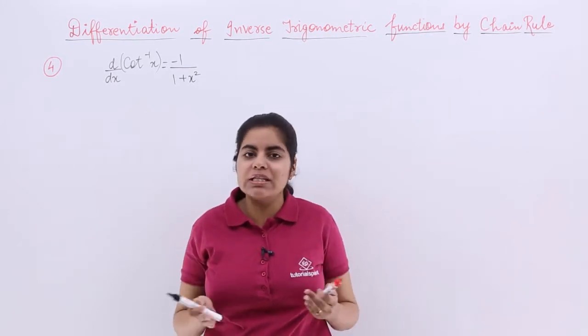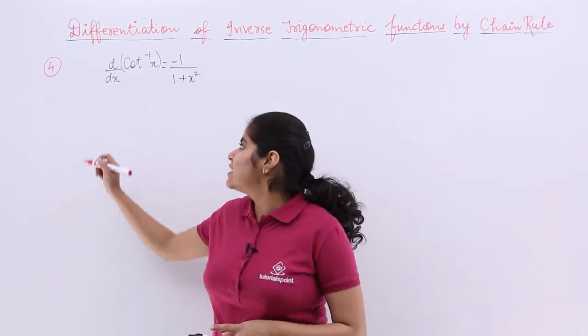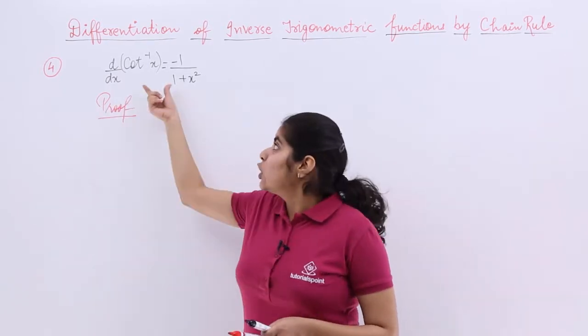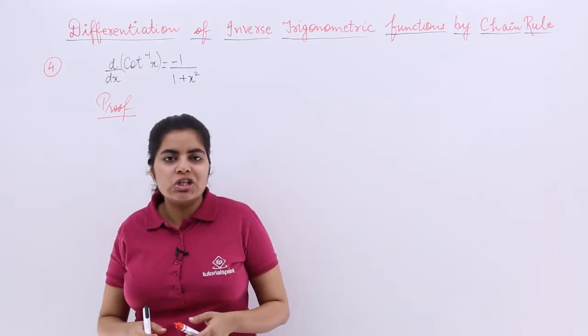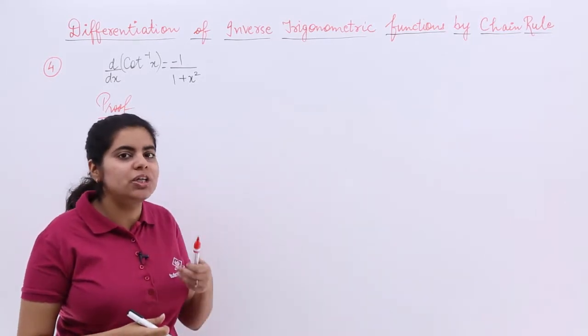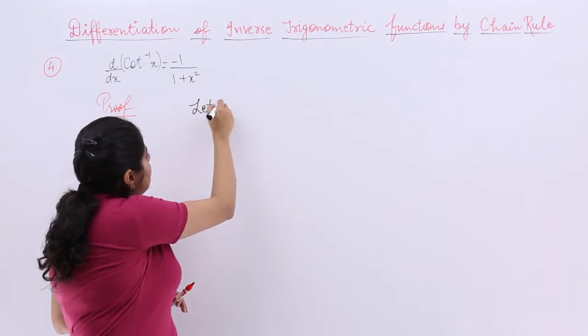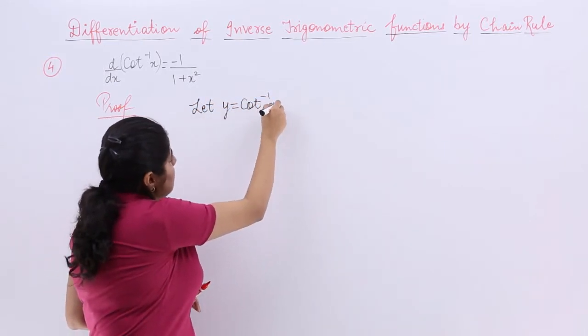So I give the heading as proof and I start with proving it. Basically cot inverse x is the function, so let's start with substituting cot inverse x equals y. So I say that let y equals cot inverse x.